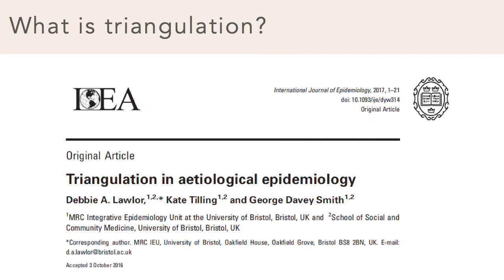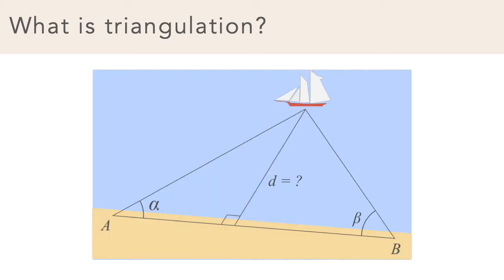But what do I mean by triangulation? The concept is discussed in detail in a 2017 paper published by Deborah Lawler, Kate Tilling, and George Davie Smith — all senior academics in the department where I work. The term itself comes from surveying, where triangulation is the process of determining the location of a point by measuring only angles to it from other known points — for example, to find the position of a ship when the positions and angles of two known points are known, using the mathematical properties of triangles.